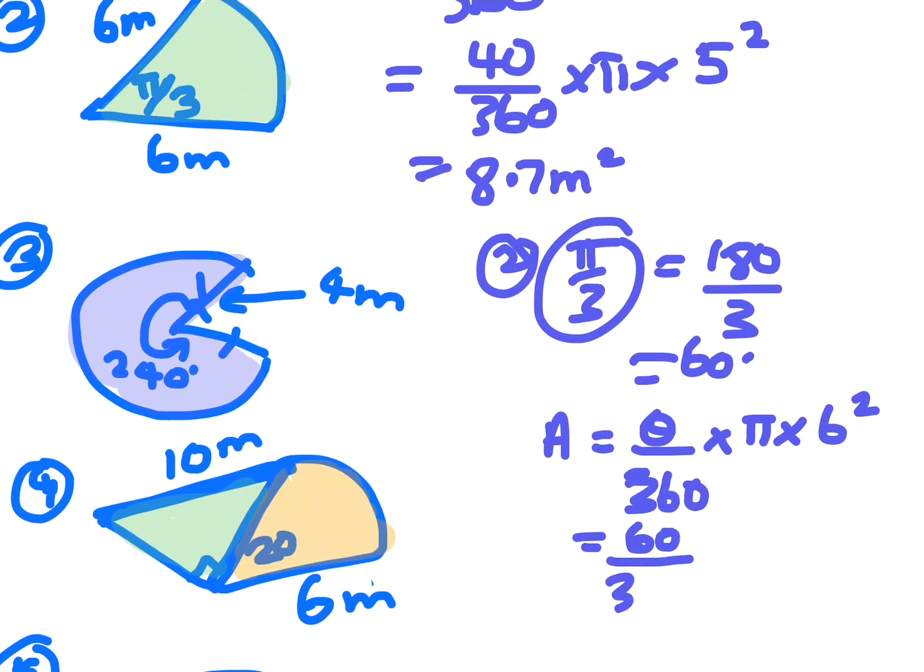So 60 on 360 times pi times six square, which is 60 on 360 times shift pi times three squared, and you end up with 4.7.